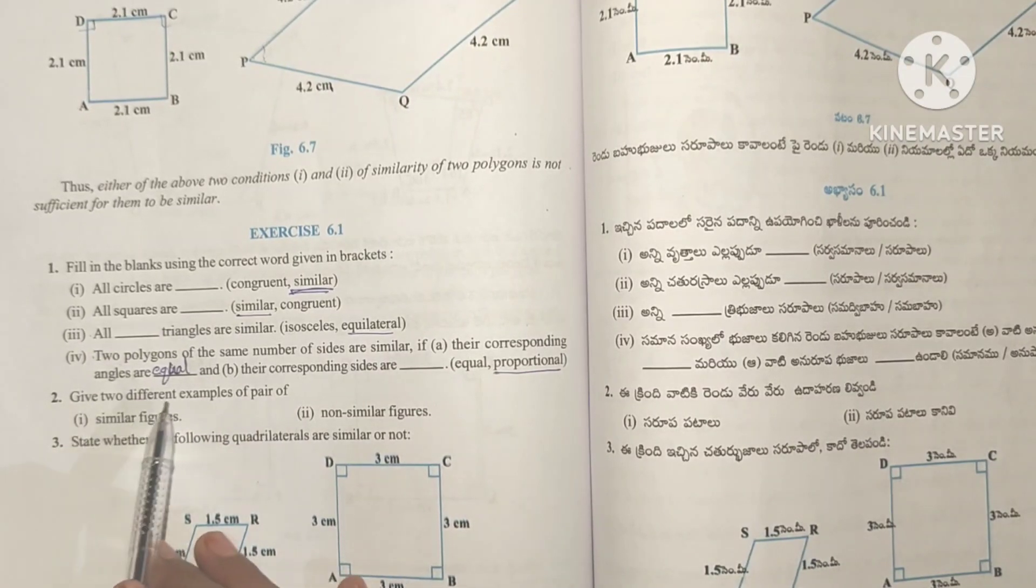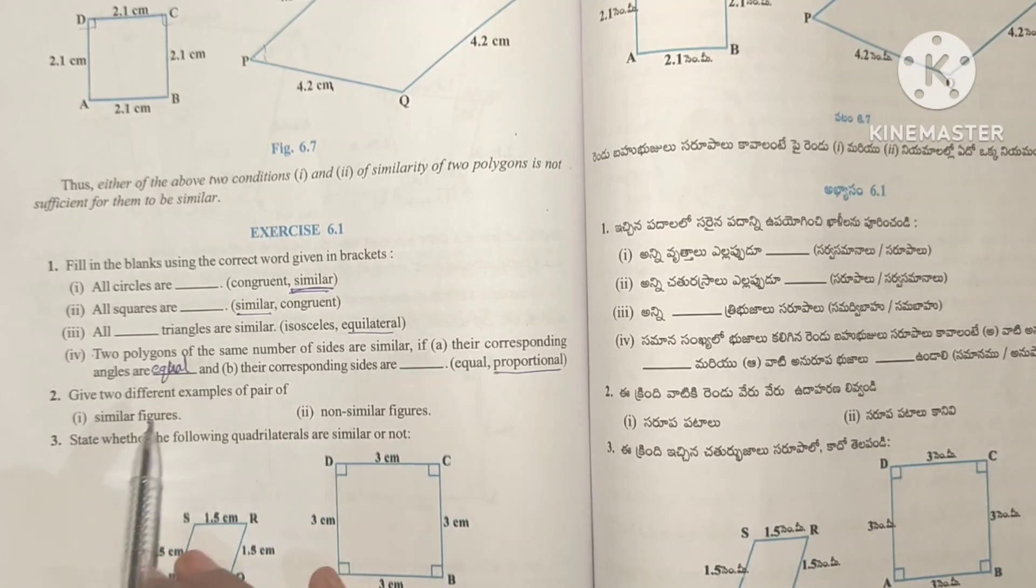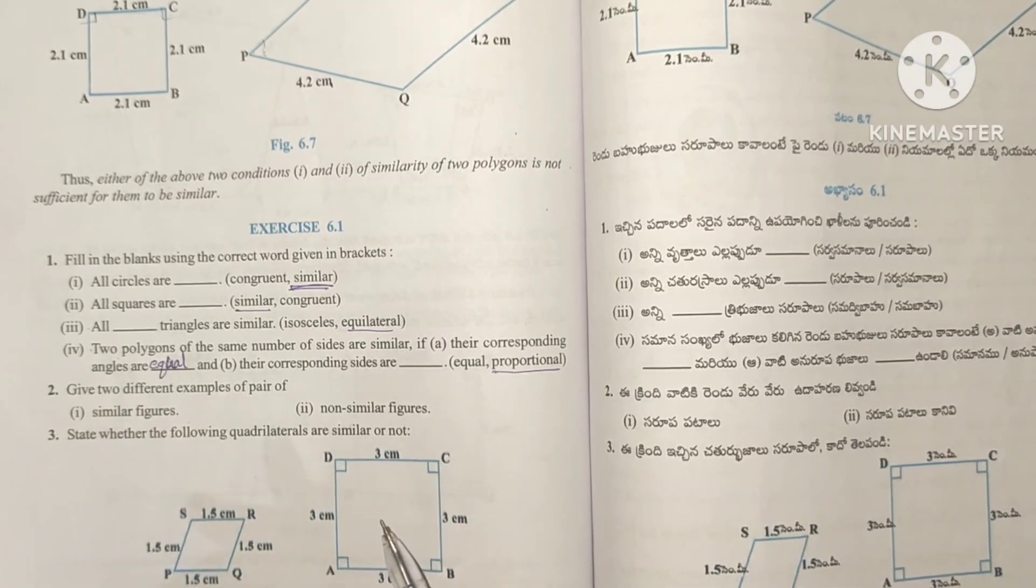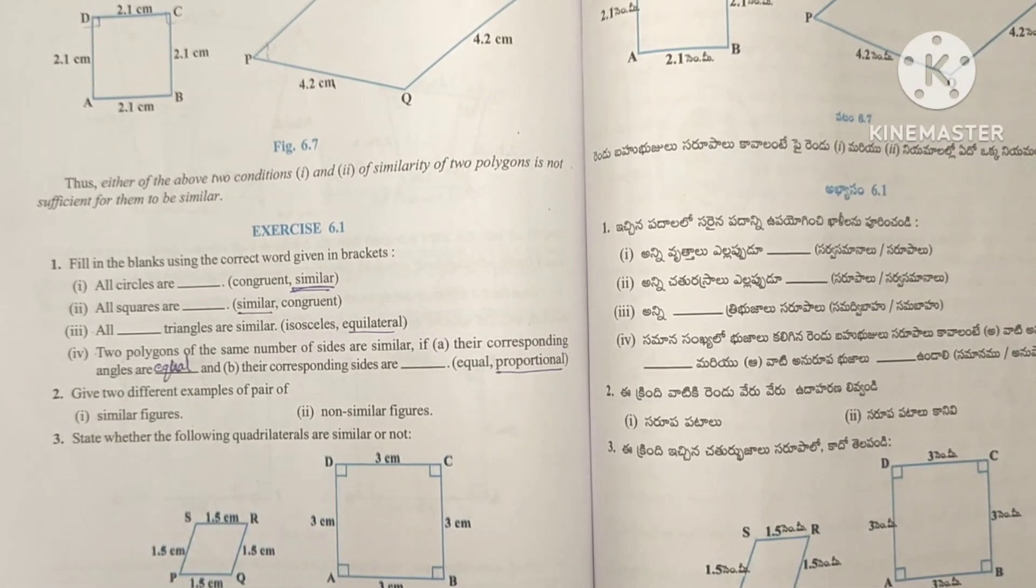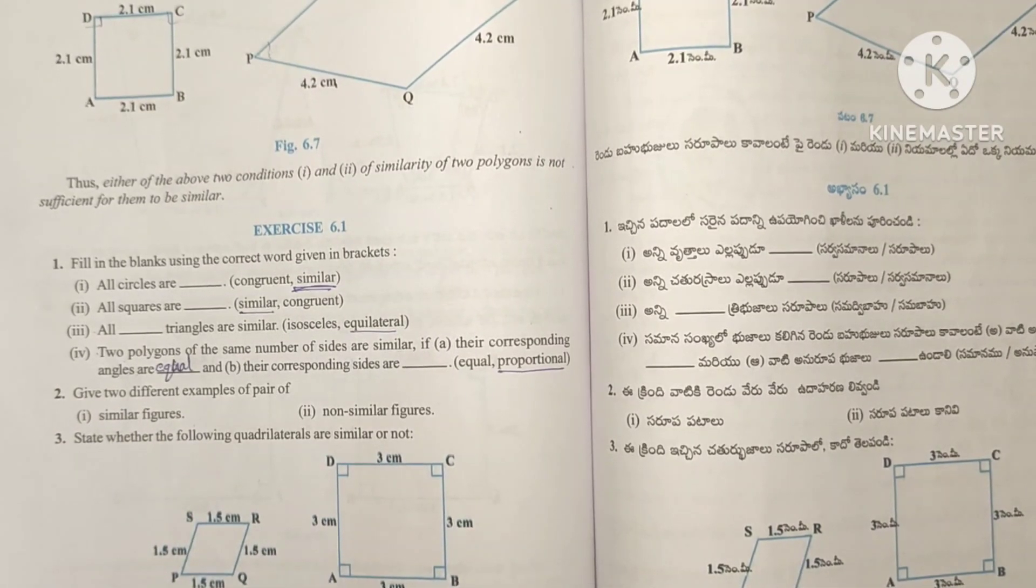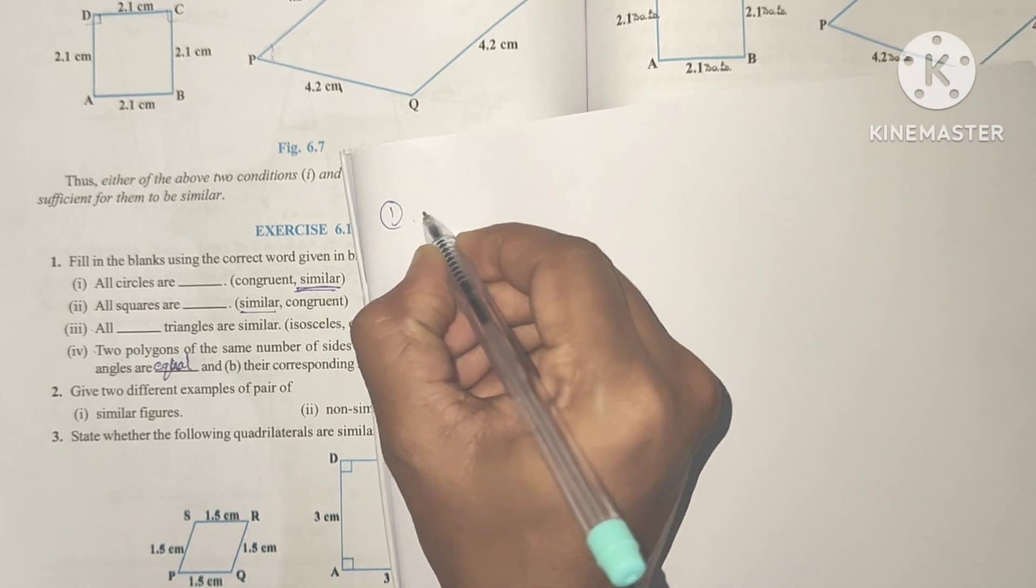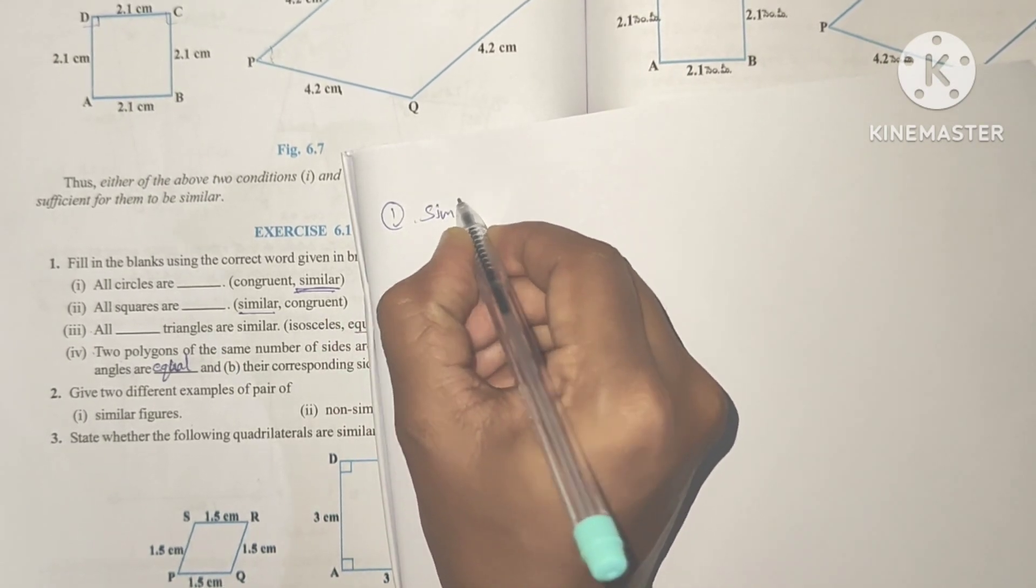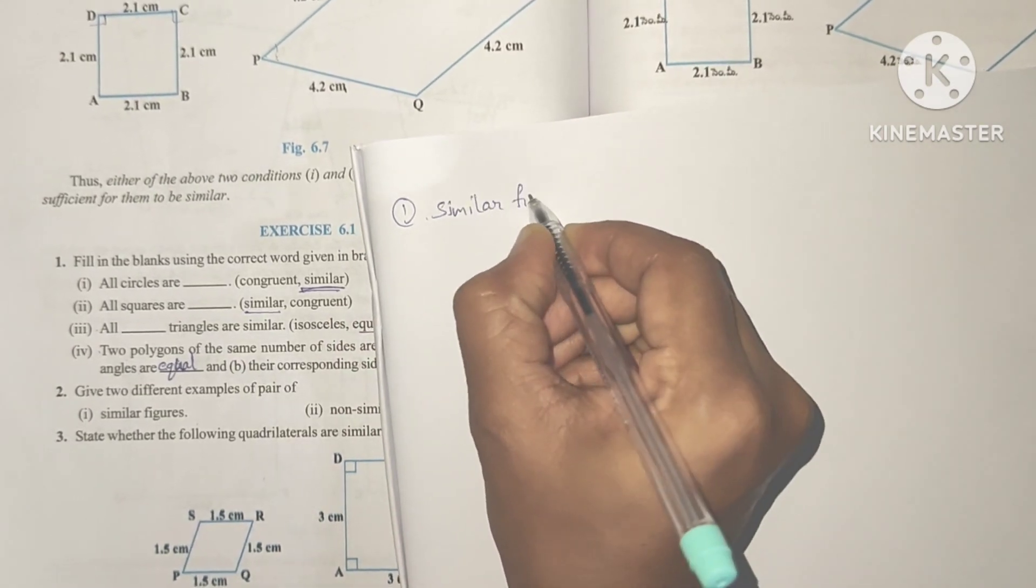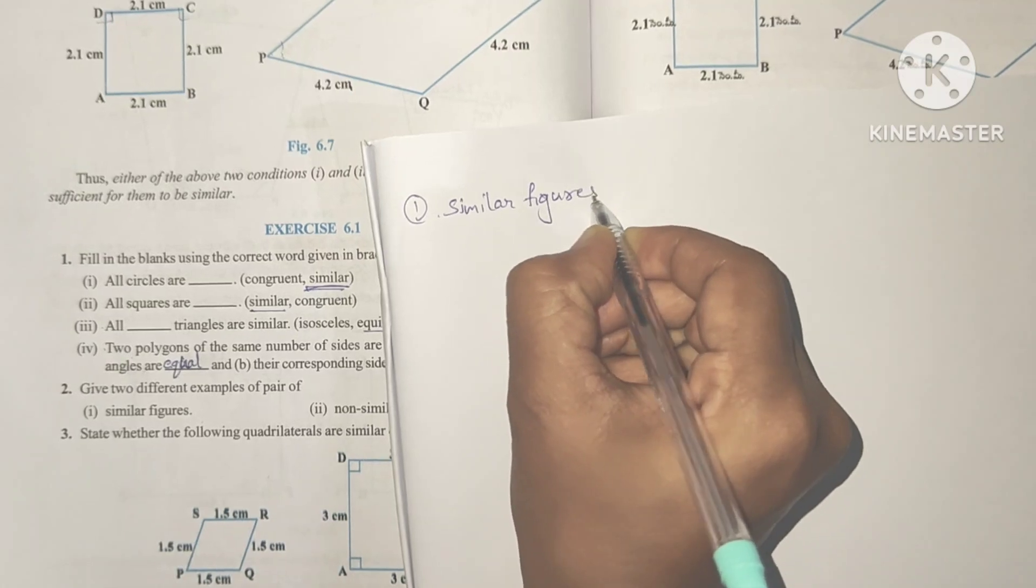Give two different examples of pair of similar figures. So what is the example for similar figures? All circles are similar, all equilateral triangles are similar, all squares are similar, all rectangles are similar. So these are examples of similar figures.